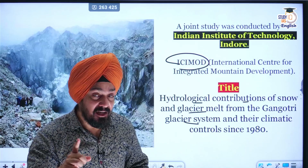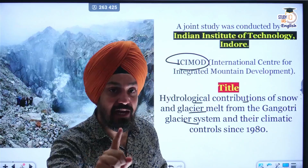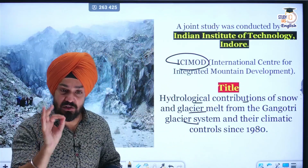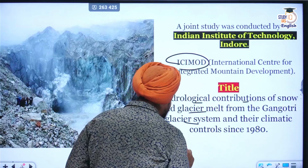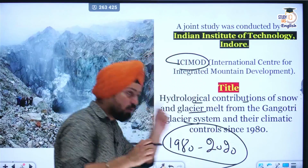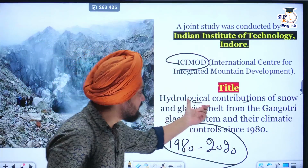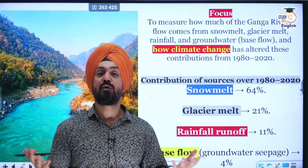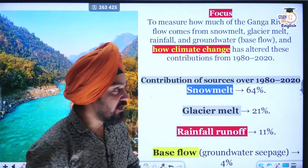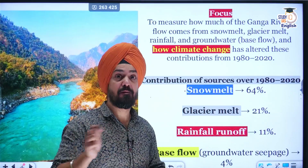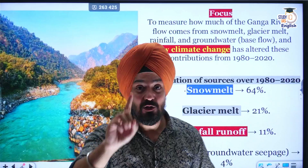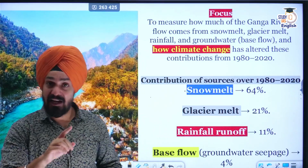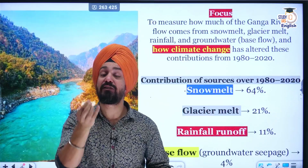Snow melt contribution is maximum during spring and early summers. The researchers also found that between the 1980s and 2020, due to climate change, there is an alteration in this hydrological contribution. They analyzed what are the sources of water for river Ganga — snow melt and glacier melt are the major sources, but apart from it, monsoonal rainfall also plays a very important role, contributing almost 11 percent of flow in river Ganga. Groundwater is also a small but important source.